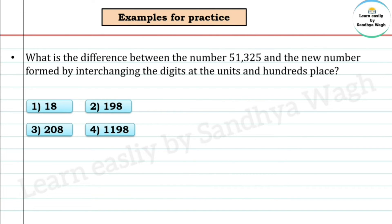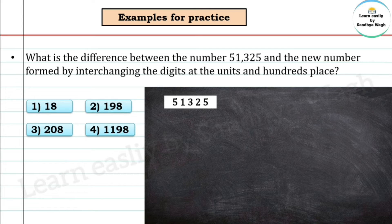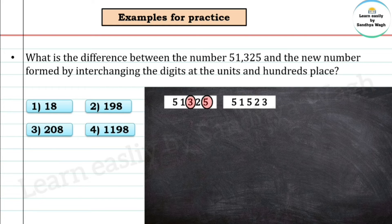Practice example: What is the difference between the number 51,325 and the new number formed by interchanging the digits at the units and hundreds place? The number is 51,325, and we interchange the units and hundreds digits. After interchanging, the new number formed is 51,523.